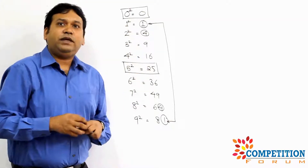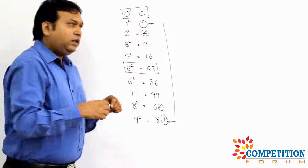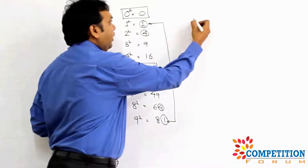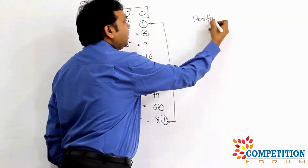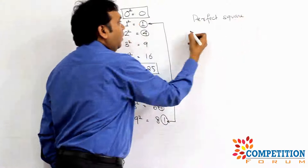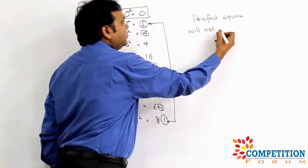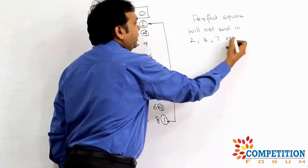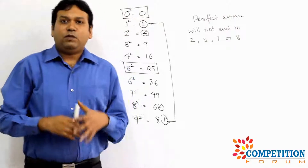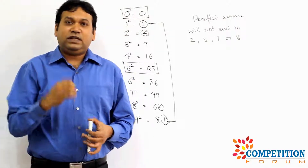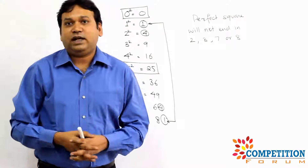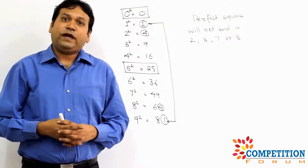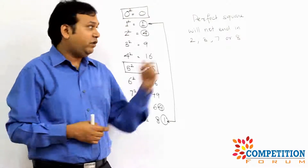Another useful observation: none of these squares end in 2, 3, 7, or 8. So you can say that a perfect square will not end in 2, 3, 7, or 8. The moment you see a number ending in 2, 3, 7, or 8, you can immediately understand it will not be a perfect square. Perfect squares can only end in 0, 1, 4, 5, 6, and 9. This is one of the most important things to learn.